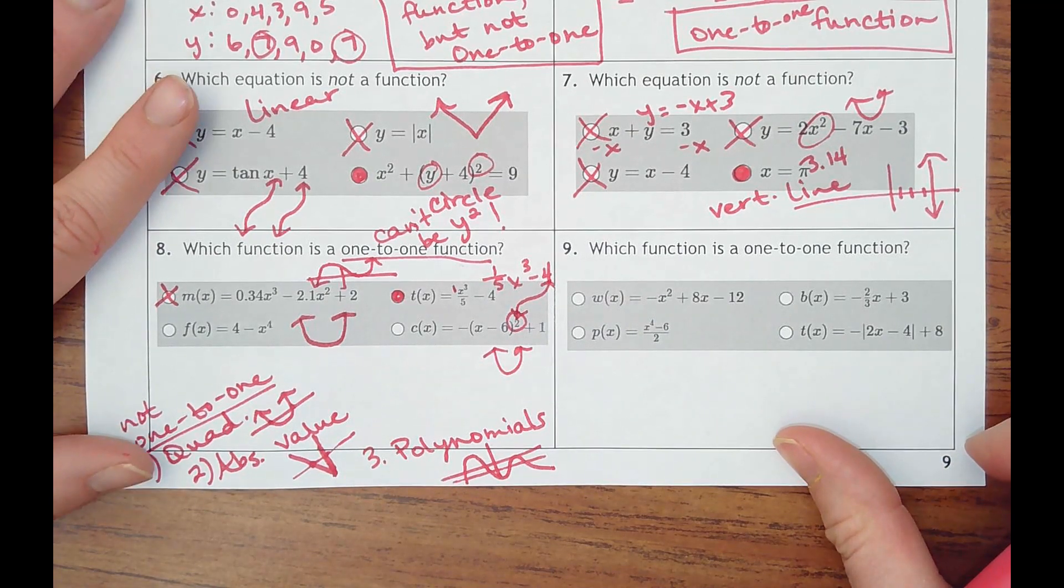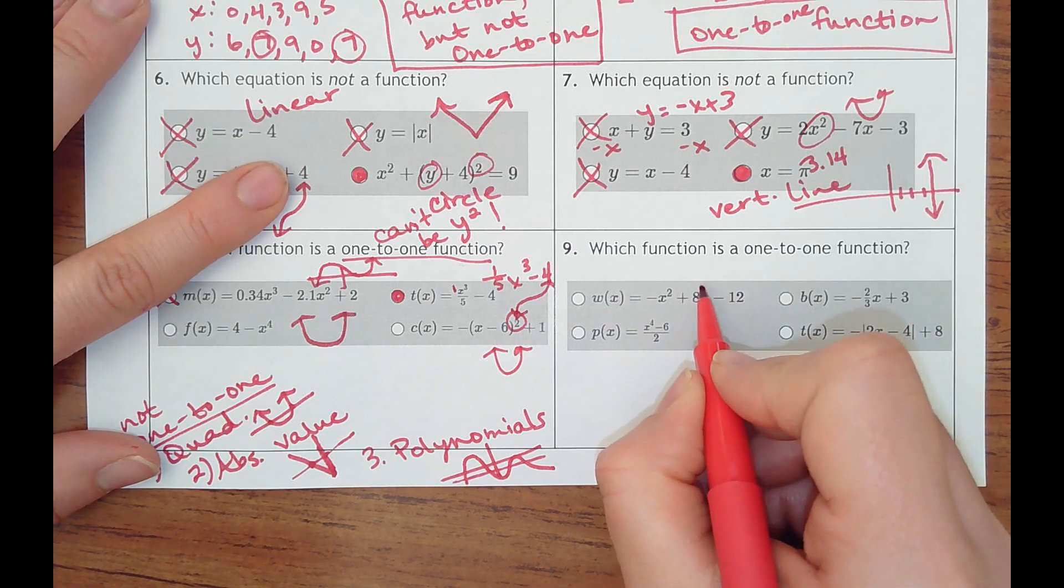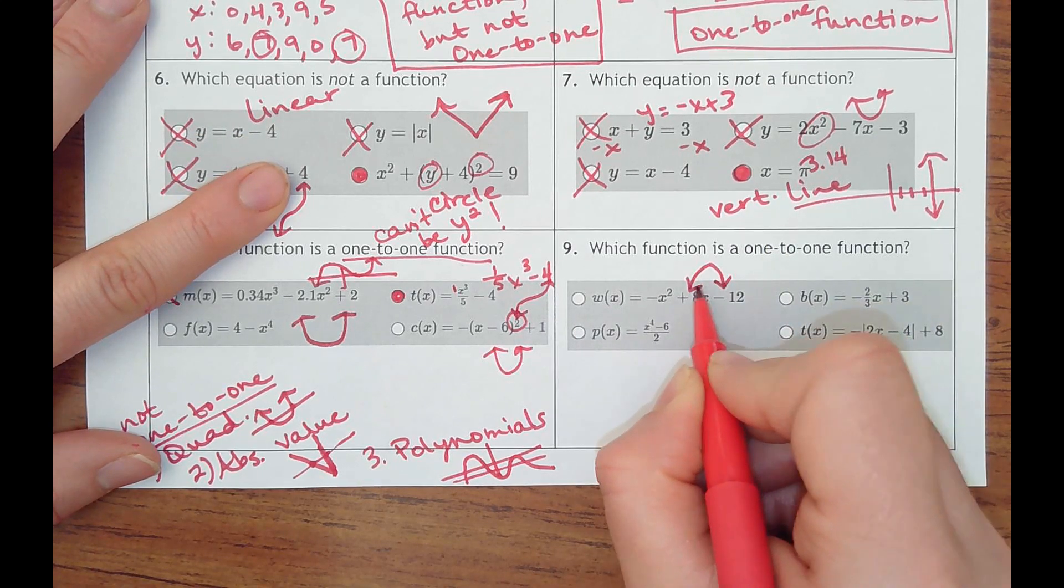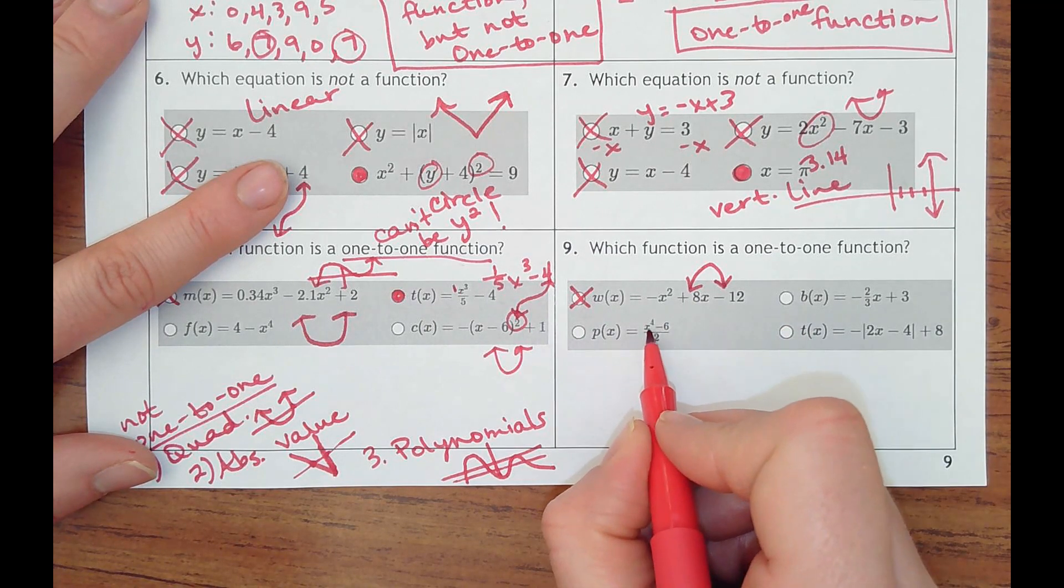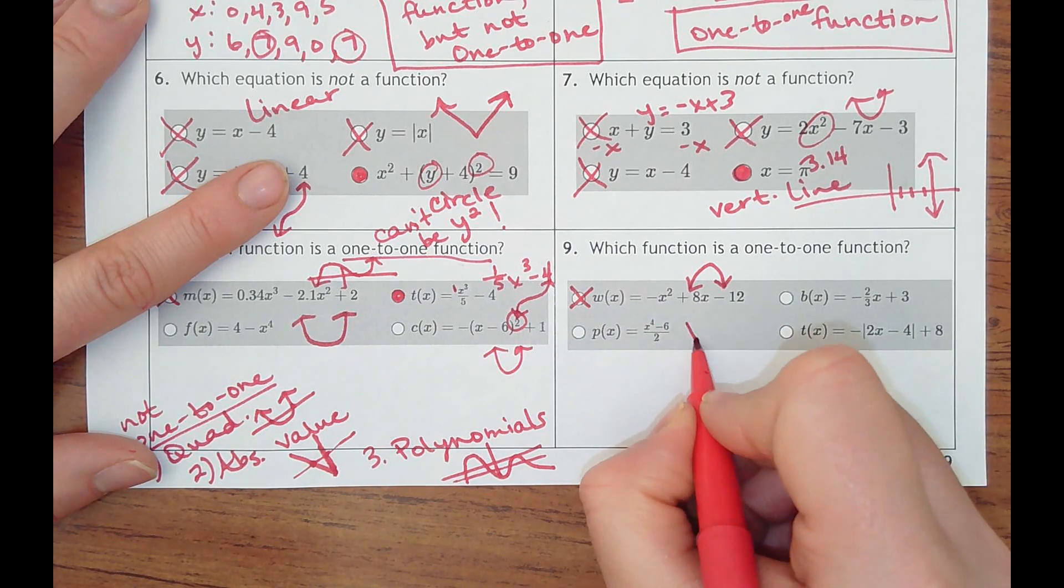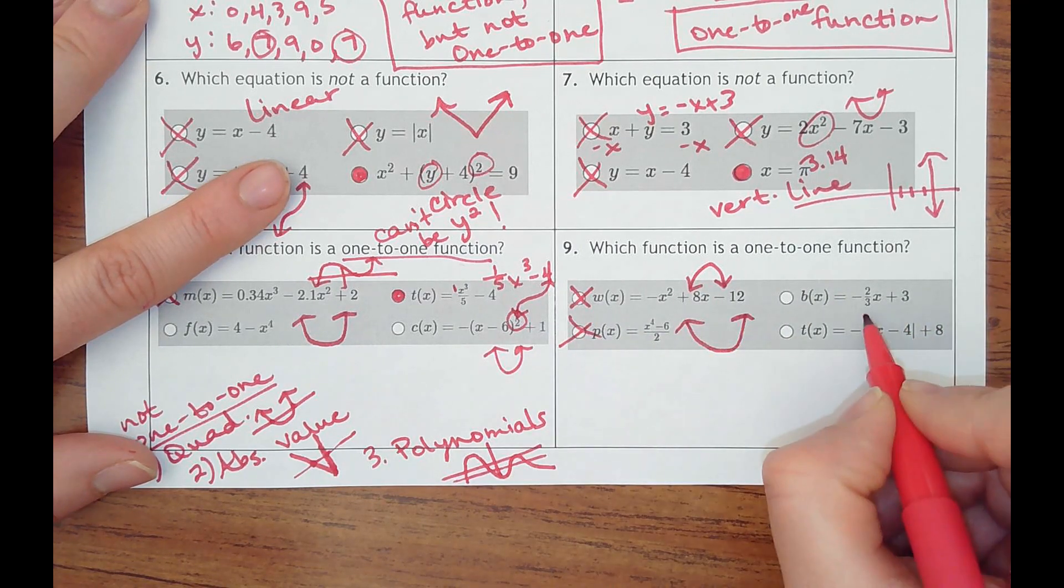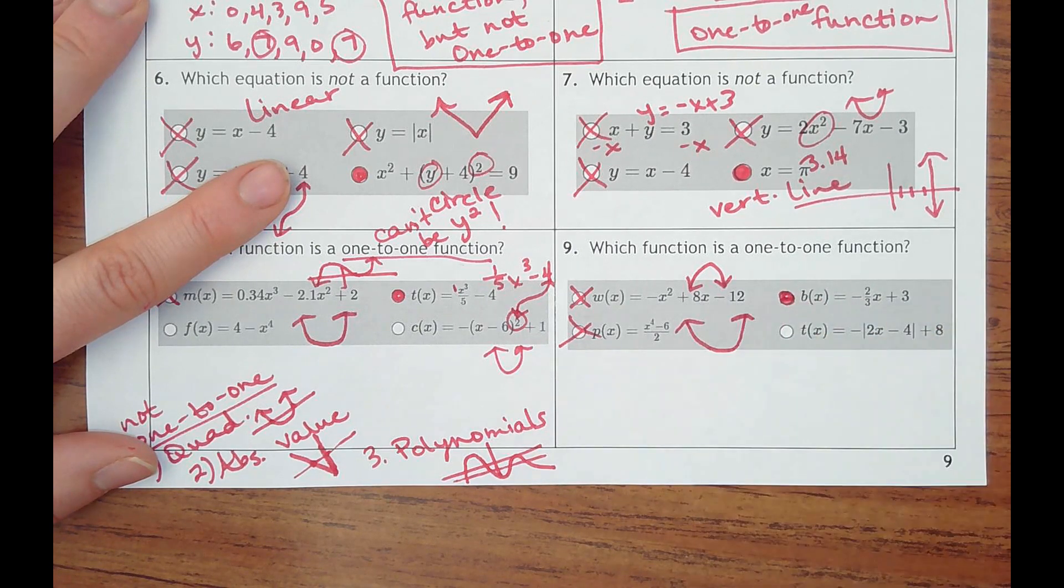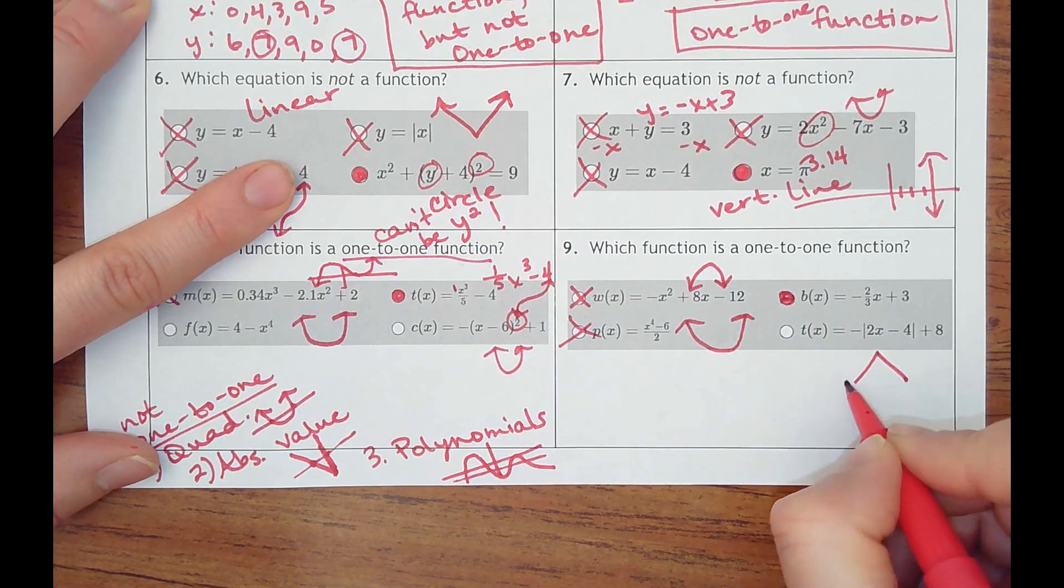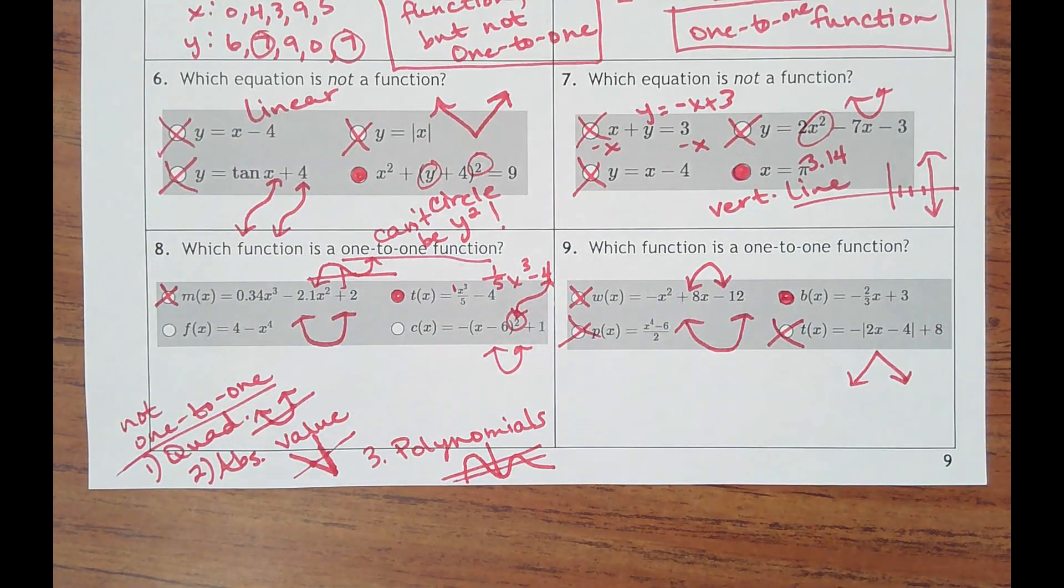And then number nine, which one is? We have x squared plus 8x. That's a quadratic opening down. That is not a one-to-one. We have x to the fourth. That's going to be just with the flatter bottom, but still a quadratic. That is not. That is y equals mx plus b. That is. And that's absolute value opening down. That is not. So kind of process of elimination, using what you know. Also, if you need to graph it, that's fine.